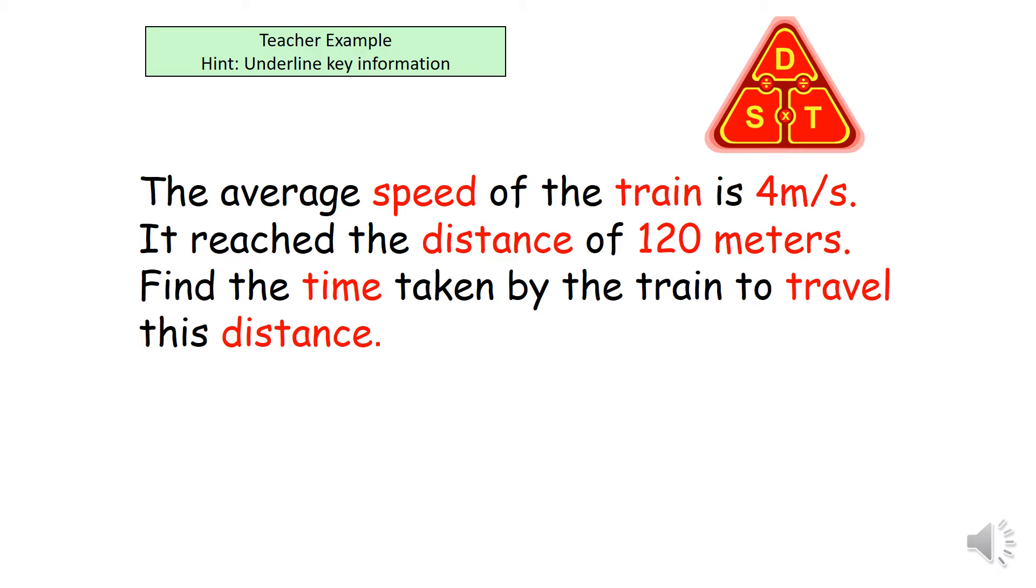So first things first, we write down S, D and T and write down our known information. The information we know is speed is 4 meters per second, and the distance is 120 meters.